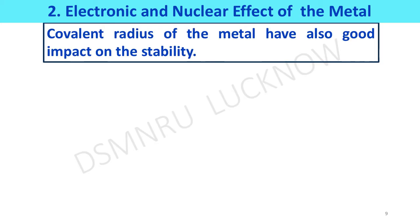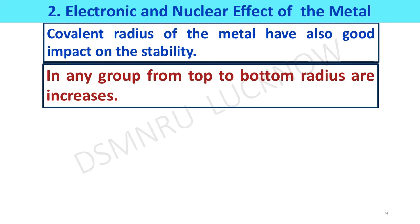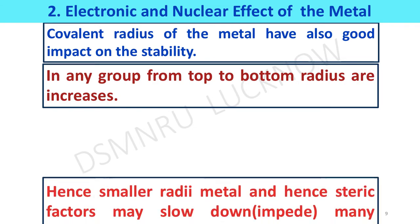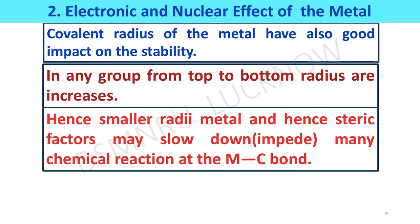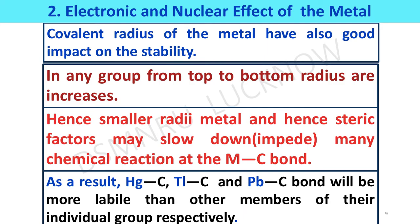The covalent radius of the metal also has a significant impact on stability. In any group going from top to bottom, the radius increases. Smaller radius metals experience greater steric crowding; in other words, being attached to bulkier groups slows down many chemical reactions, making them more inert compared to those with bigger radii and smaller groups. For example, mercury-carbon, thallium-carbon, and lead-carbon bonds will be more labile than other members of their respective groups 12, 13, and 14.